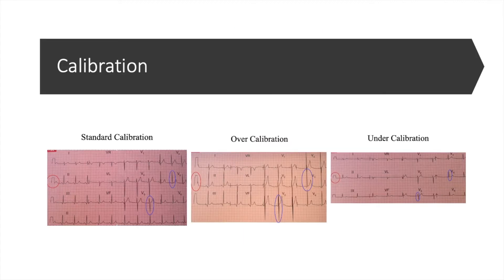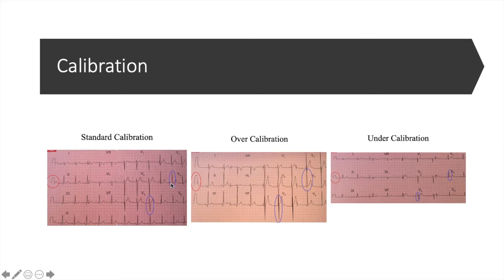An ECG is important not only for looking at how fast the heart is going but also for the structural component. To identify the calibration, you need to look at the small square marker, which should be exactly 10 squares high — no more and no less. The calibration is important because it determines how high or low the rest of the ECG will look.